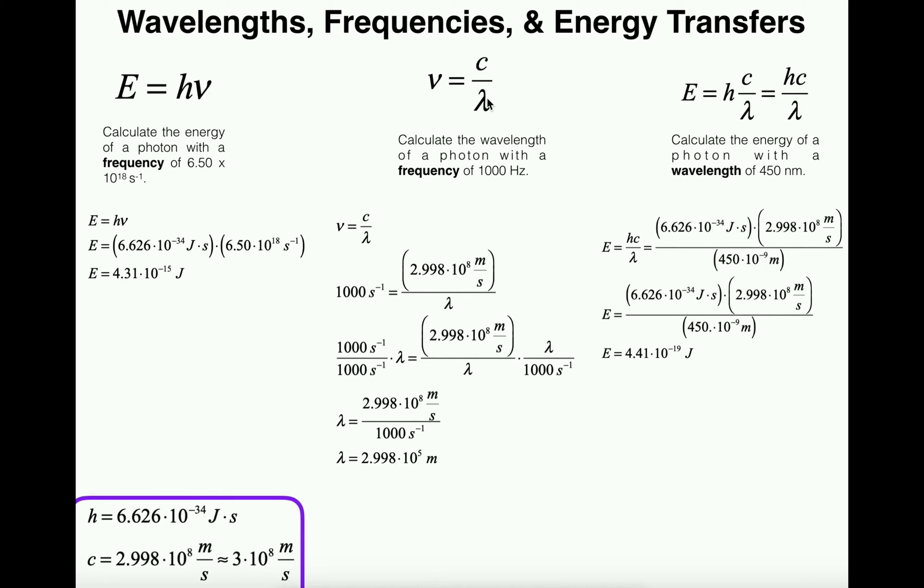If we know that ν equals c over lambda, we can take c over lambda and substitute it in for ν in this equation. What that would give us is the energy E equals Planck's constant times the speed of light divided by lambda. If we move those together we get E = hc/λ. This is another form of the first equation that takes into account the second equation, useful when we're asked to calculate energy but we're given a wavelength instead of a frequency.